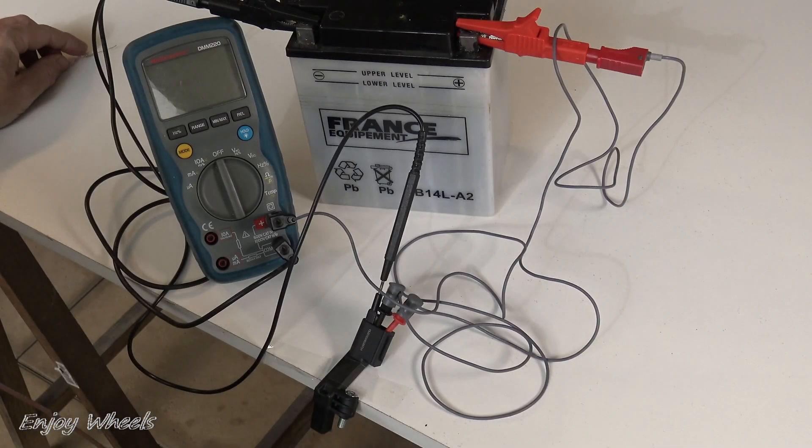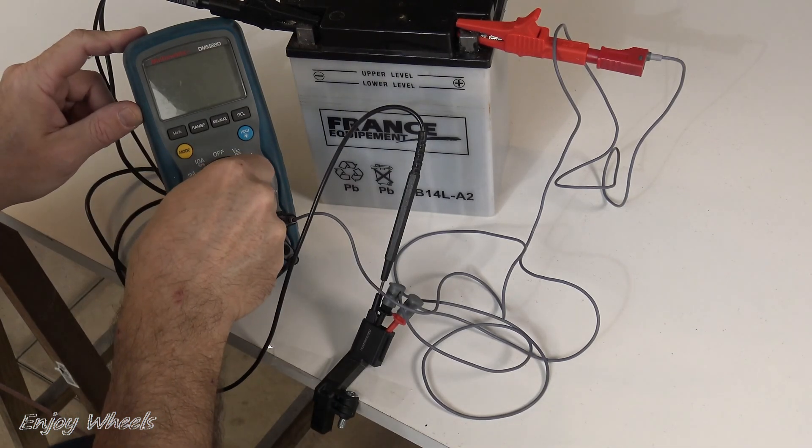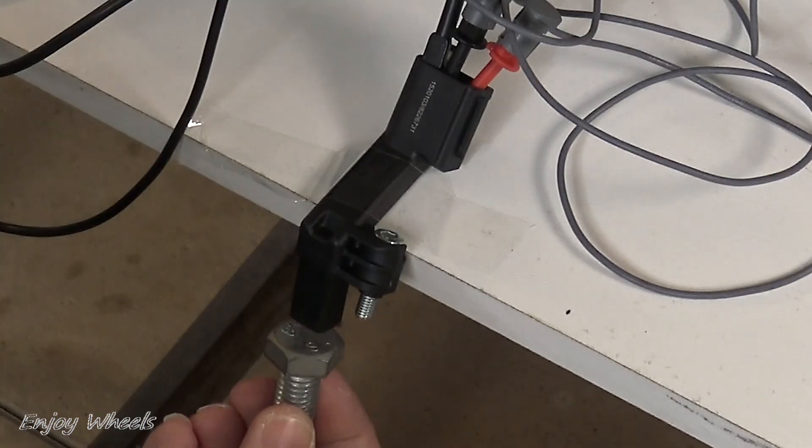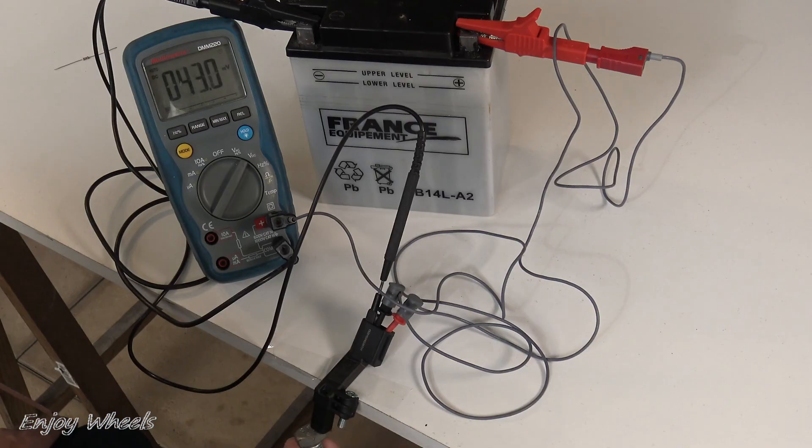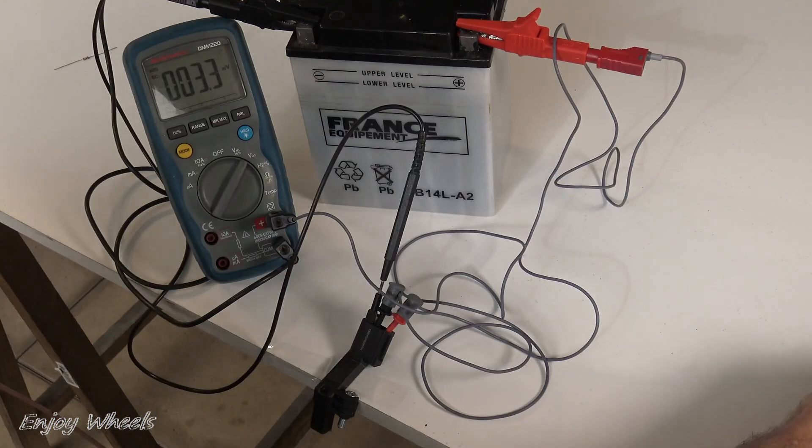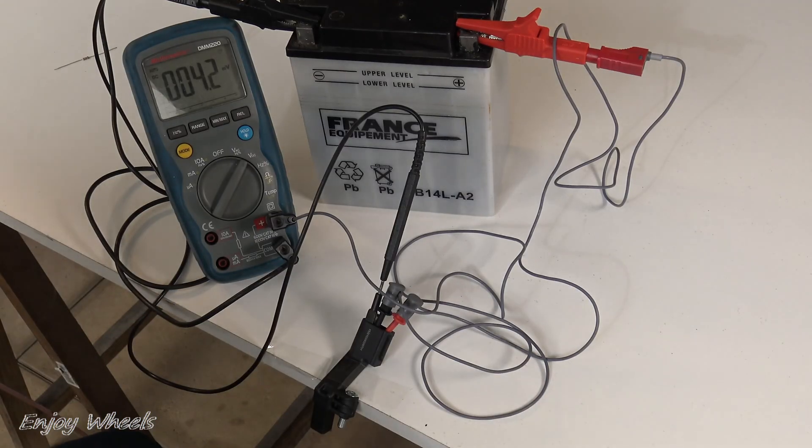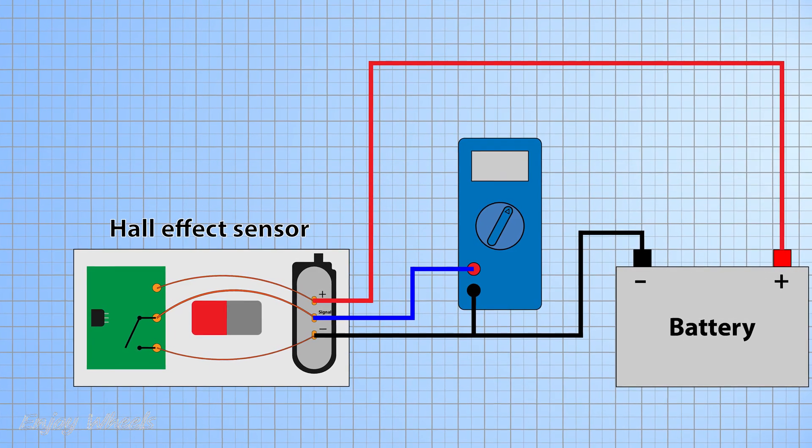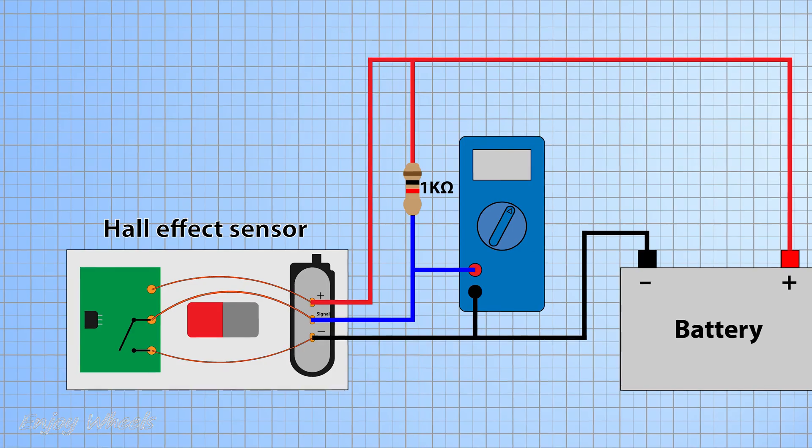So if I leave the previous connection and I put my multimeter in DC voltmeter mode, when I approach the screw, you see that nothing happens at all. The display here is millivolts. But in fact that is normal. Whether the switch is open or closed, there is no voltage at these terminals. To measure the battery voltage when the switch is open, we will simply add a pull-up resistor to the signal output.